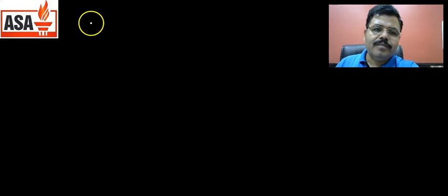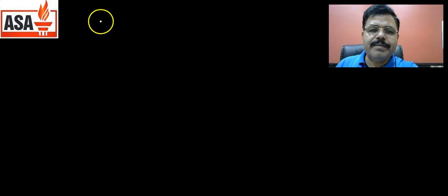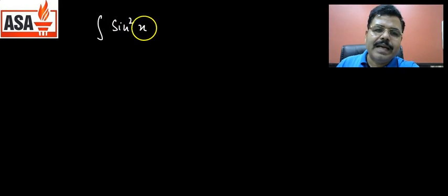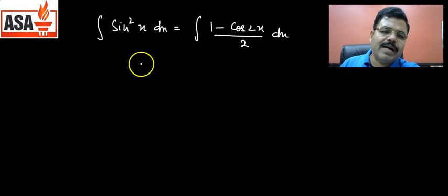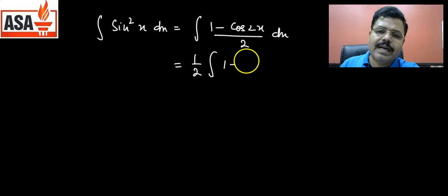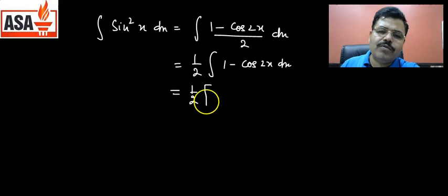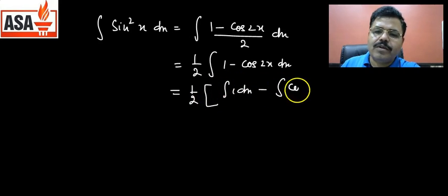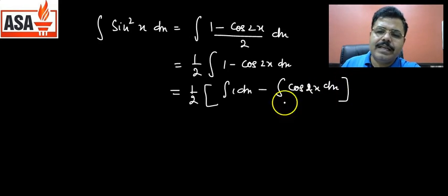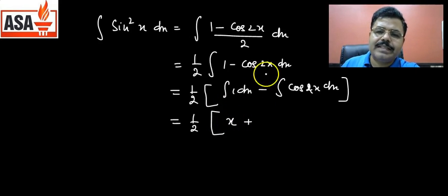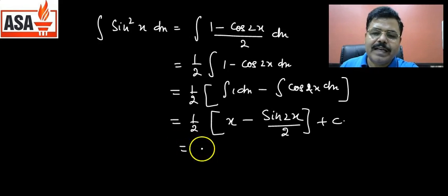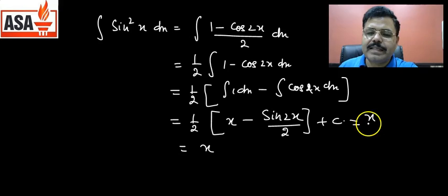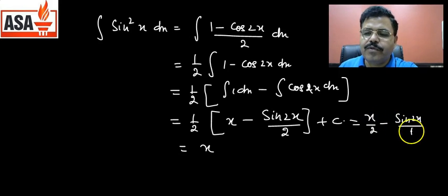Let's do an example. To integrate sin²x dx, we write it as ∫(1 − cos2x)/2 dx. The constant 1/2 comes out: (1/2)∫(1 − cos2x) dx. This gives (1/2)[x − sin2x/2] + c, which we can write as x/2 − sin2x/4 + c. That is the answer.